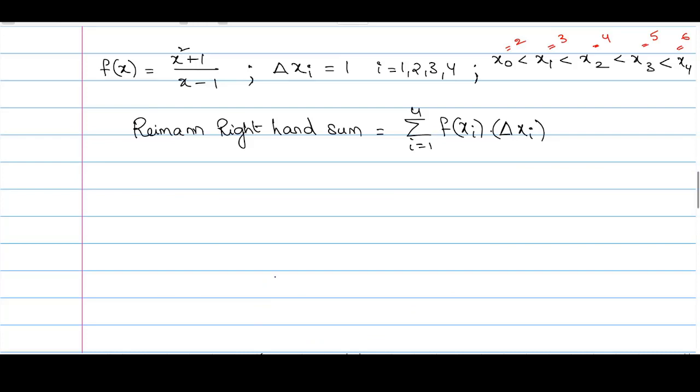Now that we have all the required values ready, we are ready to compute Riemann right-hand sum. It will be equal to summation i equals 1 to 4, f of x i times delta x i.